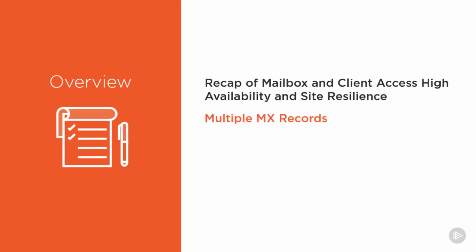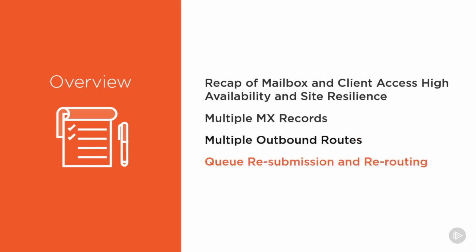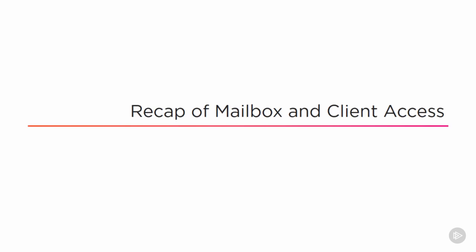Then we'll talk about using multiple MX records for inbound mail flow, multiple outbound routes for email that is going to external recipients, and finally, queue resubmission and rerouting. Let's just spend a few minutes going back over the High Availability and Site Resilience for mailbox and client access services.